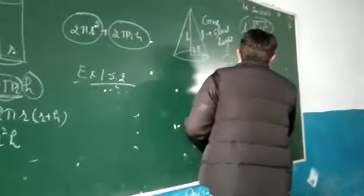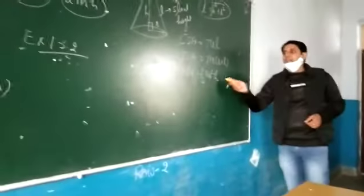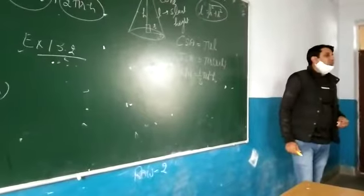1/3 πr²h. 1/3 πr²h. That is the volume of the cone.